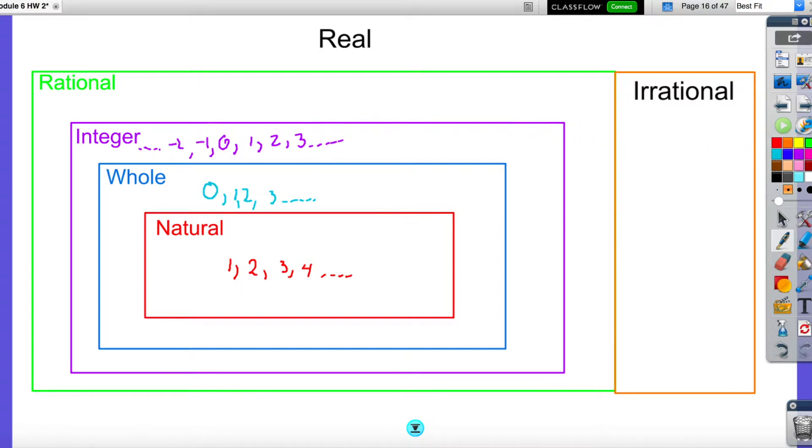Now rational numbers is when we introduce fractions and decimals. Certain types of decimals, I should say. A rational number is any number that could be written as a fraction. For instance, 1/5, or if I have 0.3, you can write 0.3 as 3/10. These are all rational numbers.